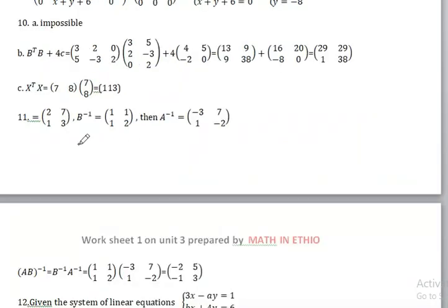X transpose times X: X is a column matrix 7, 8 transpose, row matrix 1. This is a 1 by 2 times 2 by 1, giving a 1 by 1 matrix.